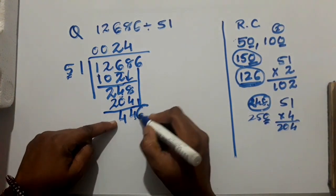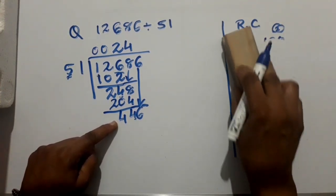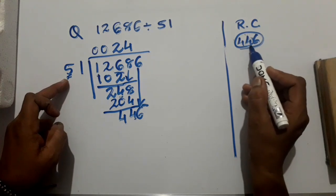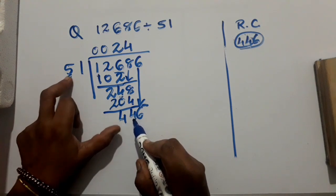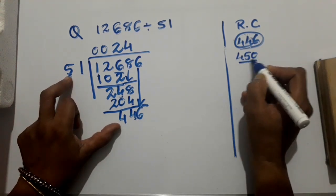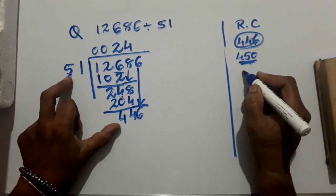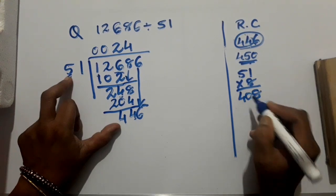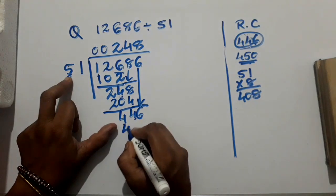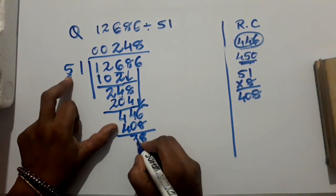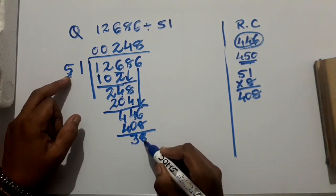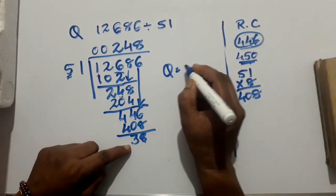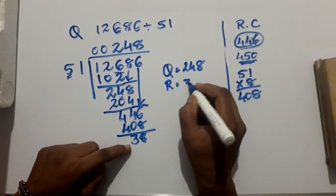Bring 6 down. Now the number is 446. Speak the table of 5: 5 eights are 40, 5 nines are 45 — adding a zero gives 450, which is greater. So go for 51 eights are 408. Remainder is 38, which is less than the divisor 51. So the quotient is 248 and the remainder is 38.